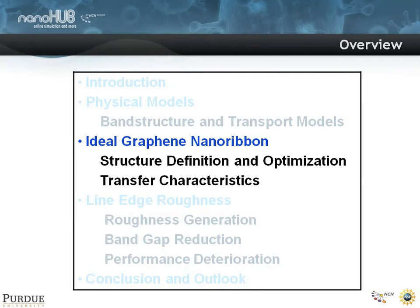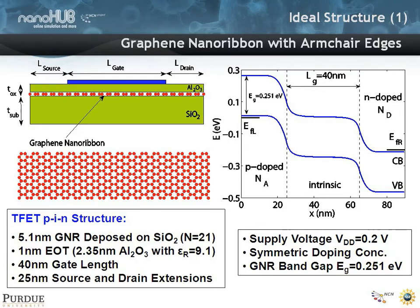In an ideal nanoribbon, you can define the structure and optimize it. In an ideal PIN tunneling transistor, we have chosen a 5.1 nanometer graphene nanoribbon deposited on silicon dioxide. There's a 1 nanometer effective oxide thickness, a 40 nanometer gate length, and a 25 nanometer source and drain extension. The electrostatic potential is computed in three dimensions. We assume a supply voltage VDD of 0.2 volt, symmetric doping, and a graphene nanoribbon band gap of 0.251 eV.